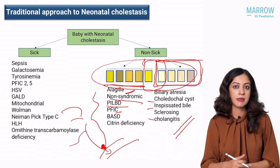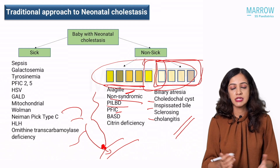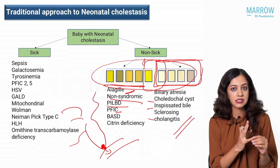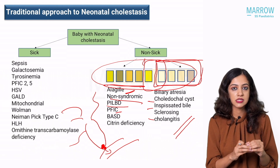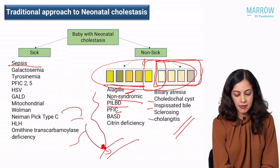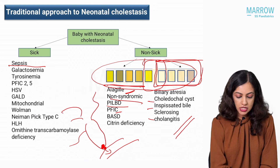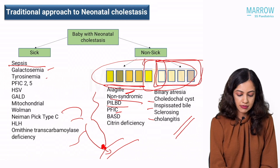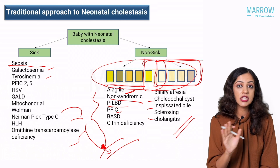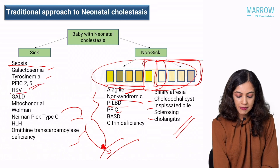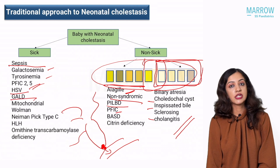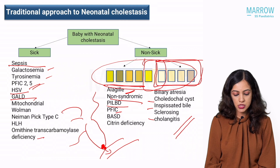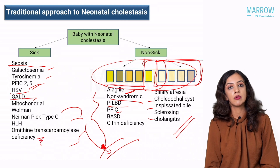What do you mean by a sick baby? A sick baby — obviously all of you would understand as pediatric residents — but it is not just enough to assess sickness from that point of view. Even a baby with ascites is a sick baby when there is cholestasis. You should think of metabolic causes apart from sepsis, where sepsis itself can lead to sickness. Think of all the other metabolic causes which can cause synthetic dysfunction of the liver: galactosemia, tyrosinemia, PFIC especially type 2 and type 5, herpes simplex virus, gestational alloimmune liver disease, mitochondrial hepatopathies, Wolman disease, Niemann-Pick type C, HLH — hemophagocytic lymphohistiocytosis — and the urea cycle defect ornithine transcarbamylase deficiency.